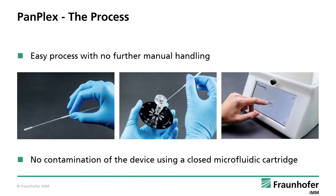To summarize the whole process: a sample is collected with the help of a swab and transferred to the reservoir, which is placed on top of the microfluidic cartridge and is filled with buffer solution. The cartridge is put into the system and the PCR reaction is started. Finally, the results of the PCR are shown on the display. The use of a closed microfluidic cartridge prevents contamination of the device.